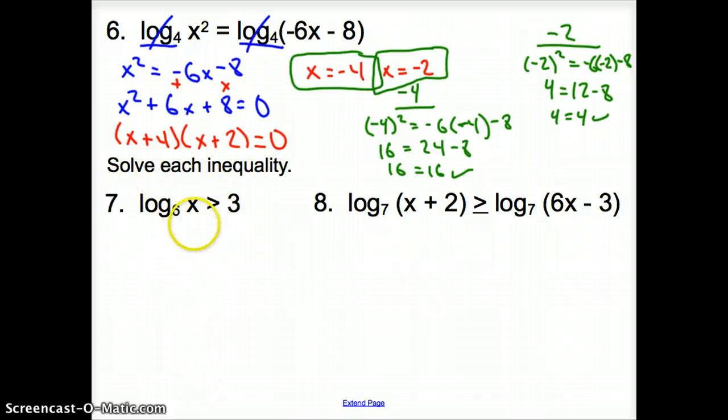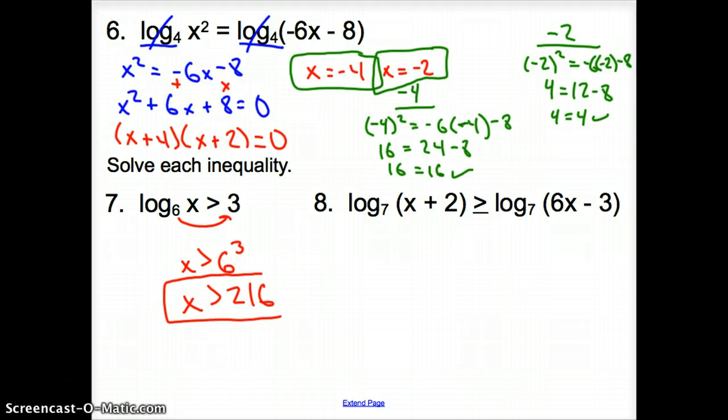7. Now, we're solving an inequality, but nothing changes. The equation, or the equal sign, now switches to an inequality. Log here, no log here. So, what do you do with this 6? Bump it over. Bump the 3 up. So, it's 6. Bumped up the 3 to an exponent. So, now x is greater than 6 to the 3rd. x now is greater than, you punch 6 to the 3rd in your calculator. You get 2, 1, 6 for your final answer.